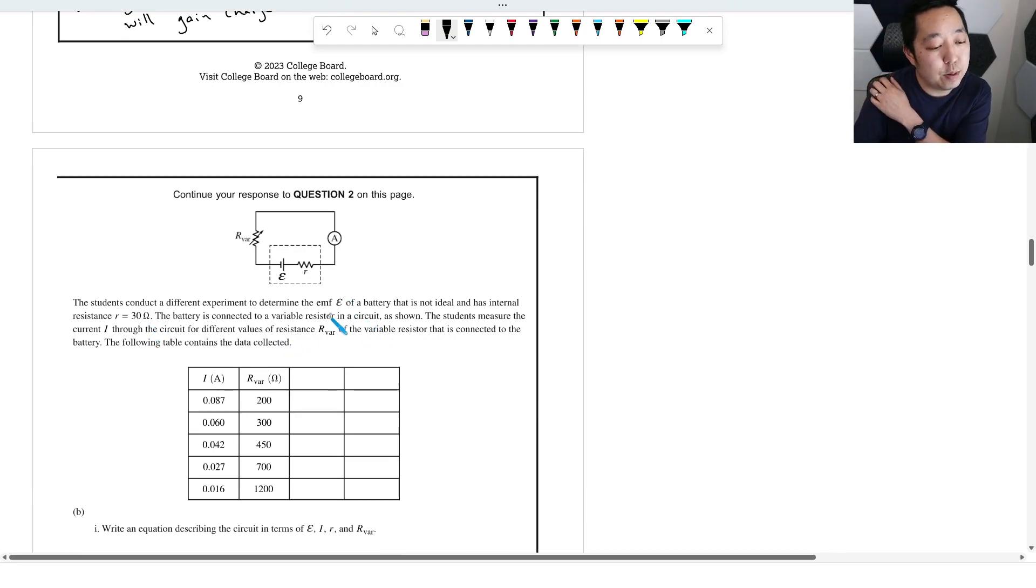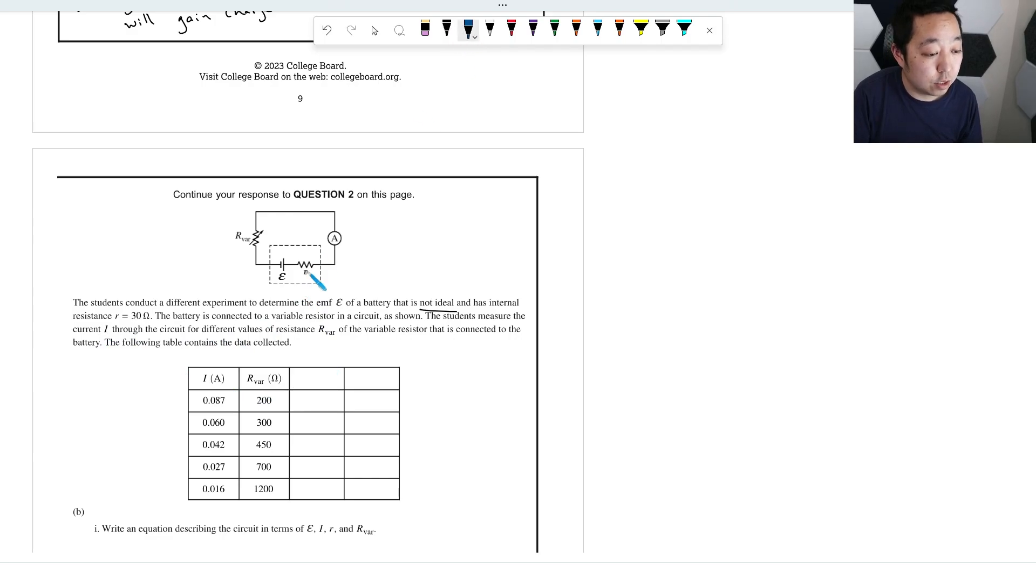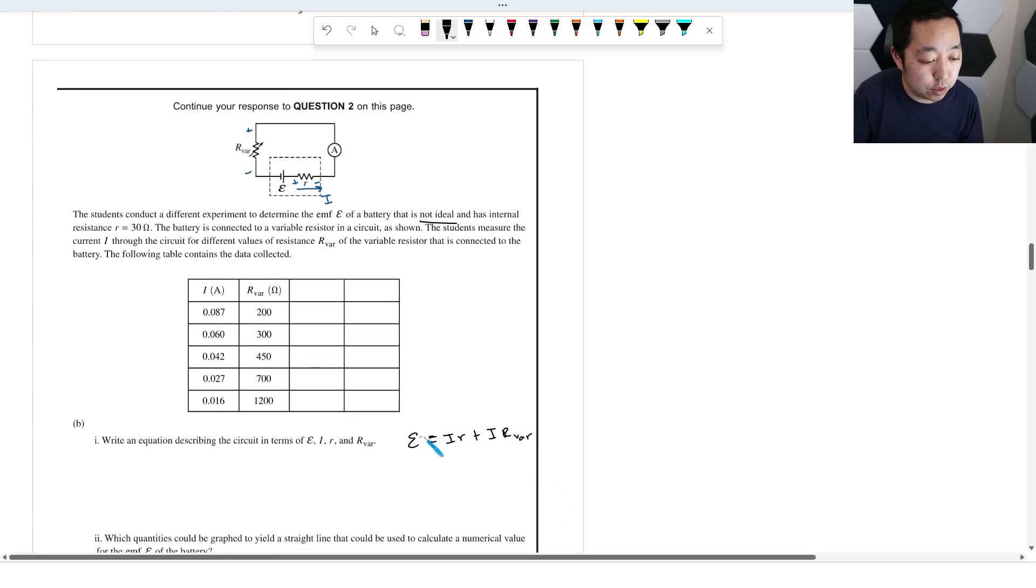Students connect a different experiment to determine the EMF of the battery that is not ideal and has internal resistance R equals 30. Battery is connected to a variable resistor shown on the circuit. Students measure the current I through the circuit for different values of R_var. The following table contains the data collected. Write an equation describing ε, I, R, and R_var. So we want an equation that's generally going to be a loop equation. Let's say we have the current through the circuit, the current is going to flow like this. And you just want to add up the voltage drops here. So you would just say the voltage source is going to equal the voltage drop across there plus the voltage drop across there. Since I is in series, it's the same current. So it's just going to be ε equal to I times R plus I times R_var. That would be my loop equation, and that would be sufficient.